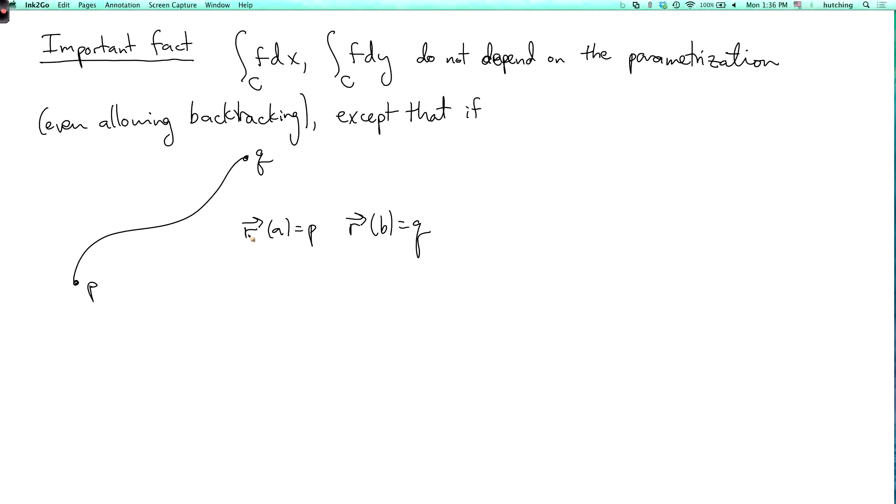So if you switch, so that now R(A) is equal to Q and R(B) is equal to P, that's what I'll call sort of switching the direction. So let's put an arrow on the curve. So as it is, we're starting at P and ending at Q. And if you switch the direction of that arrow, then you switch the sign of the integral.